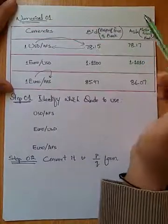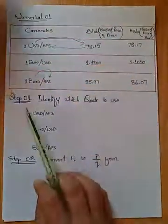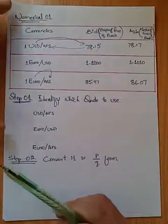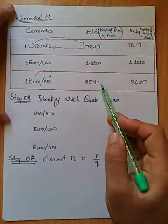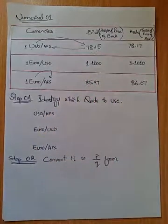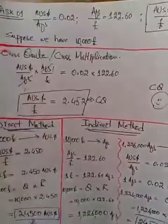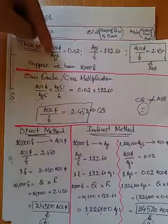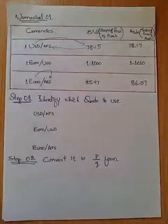So these are the two things you must know before going through the numerical: one is the bid and the next is the ask. Bid is the buying price of the bank; ask is the selling price. One unit equals this much in the other currency. The slash sign here does not represent division. Now, when you come across a situation and need to find arbitrage flow, you first need to bring the numerical into the P/Q format that we are used to from previous numericals.